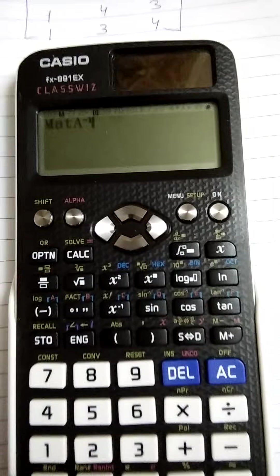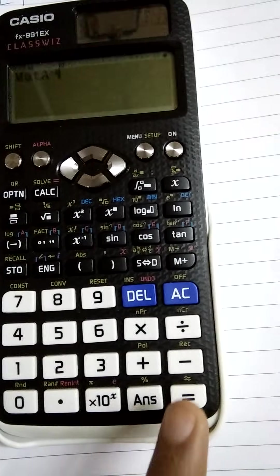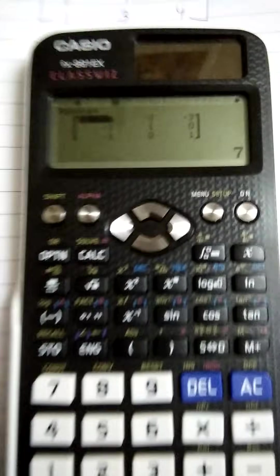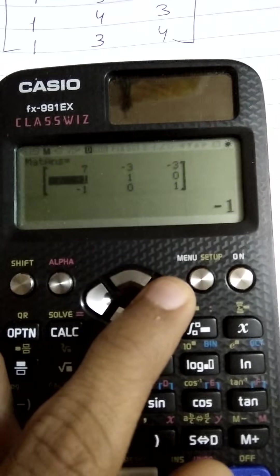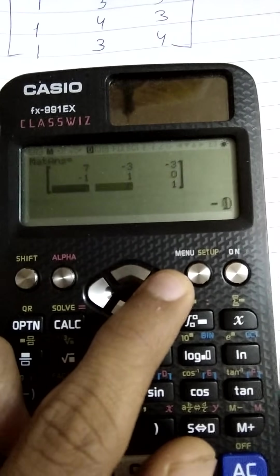As soon as this gets displayed, just press the equals button, and there is the inverse of matrix A which you have entered. That is 7, -3, -3, -1, 1, 0, -1, 0, 1.